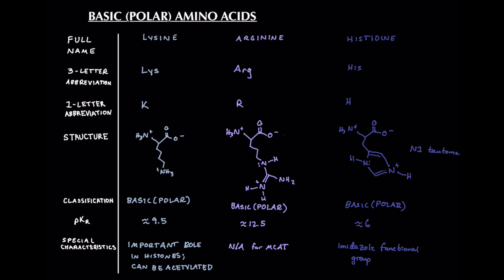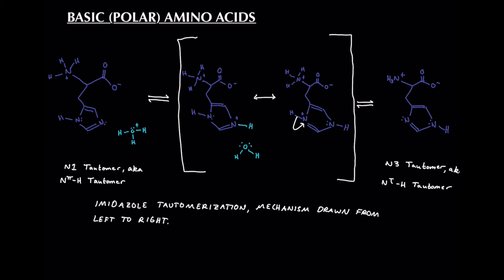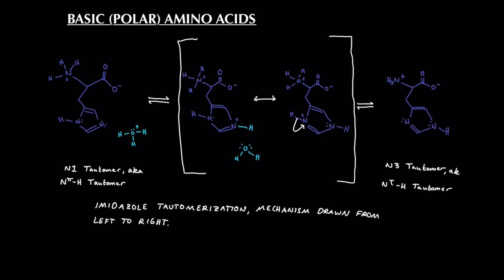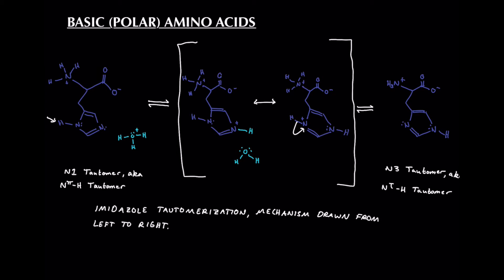Now I wanted to go over tautomerization of histidine. Now this won't be super high yield, so feel free to stop this video and move on to the next. But now we're going to be focusing on why histidine is drawn a little bit different in different diagrams. On our scheme here, we can see that histidine is shown slightly differently on each side. So on our left, we have this hydrogen over here, and then on the right we have our hydrogen over here. So which one exactly is right? Well, both of them are sort of right, at least in aqueous solution. Because we have a thing called tautomerization going on here.